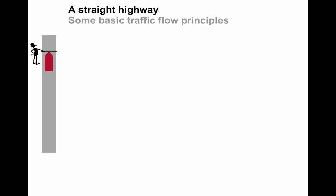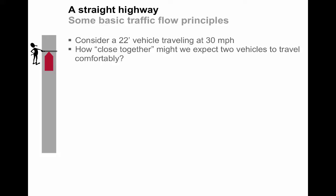So imagine a straight highway and that you're standing on the roadside and there's a 22-foot long vehicle traveling at 30 miles per hour in uncongested conditions. How close together might we expect two vehicles to be traveling comfortably? You might place a second vehicle some comfortable distance behind. Based on our knowledge of the DMV handbook that recommends one vehicle length spacing for every 10 miles per hour of speed, we can place this second vehicle maybe three vehicle lengths behind. So in this case it would be 66 feet between the two vehicles.